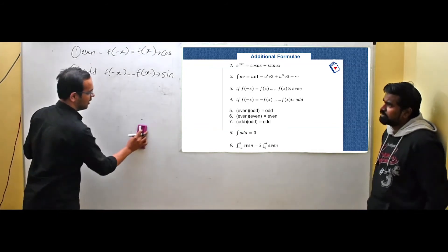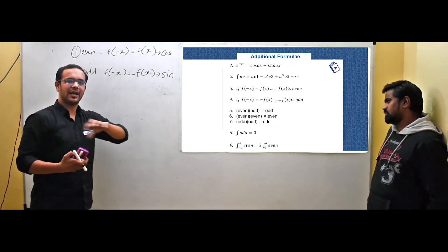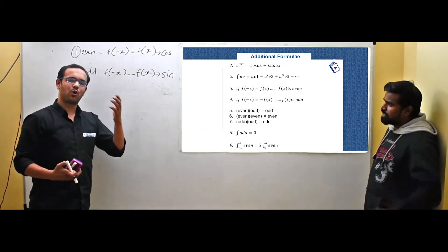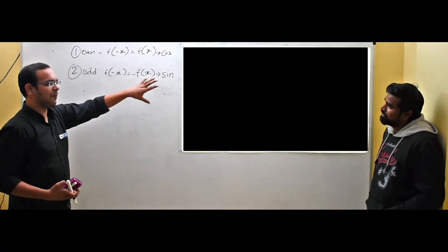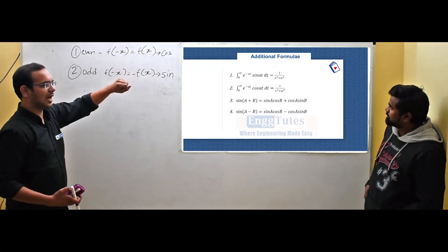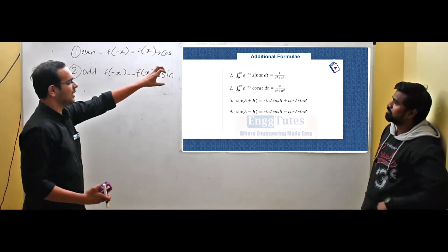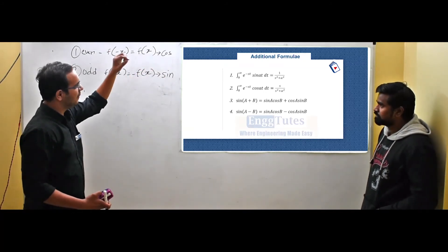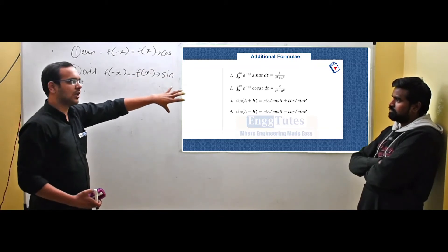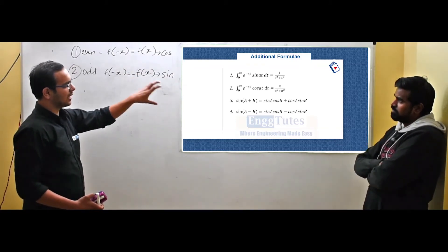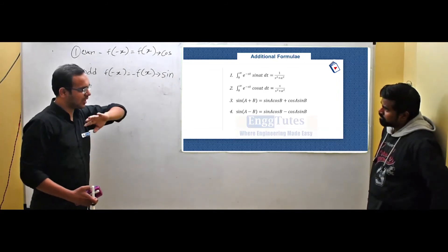Sometimes in the book you are given a direct formula with a direct answer. For the mechanical group there is a particular approach, but for the computer group it is just displayed. These two important formulas can be applied: there is sine and cosine involved, and the term e to the power minus st is very important. The limits are 0 to infinity. The basic prerequisite formulas include sine of A plus B and sine of A minus B.